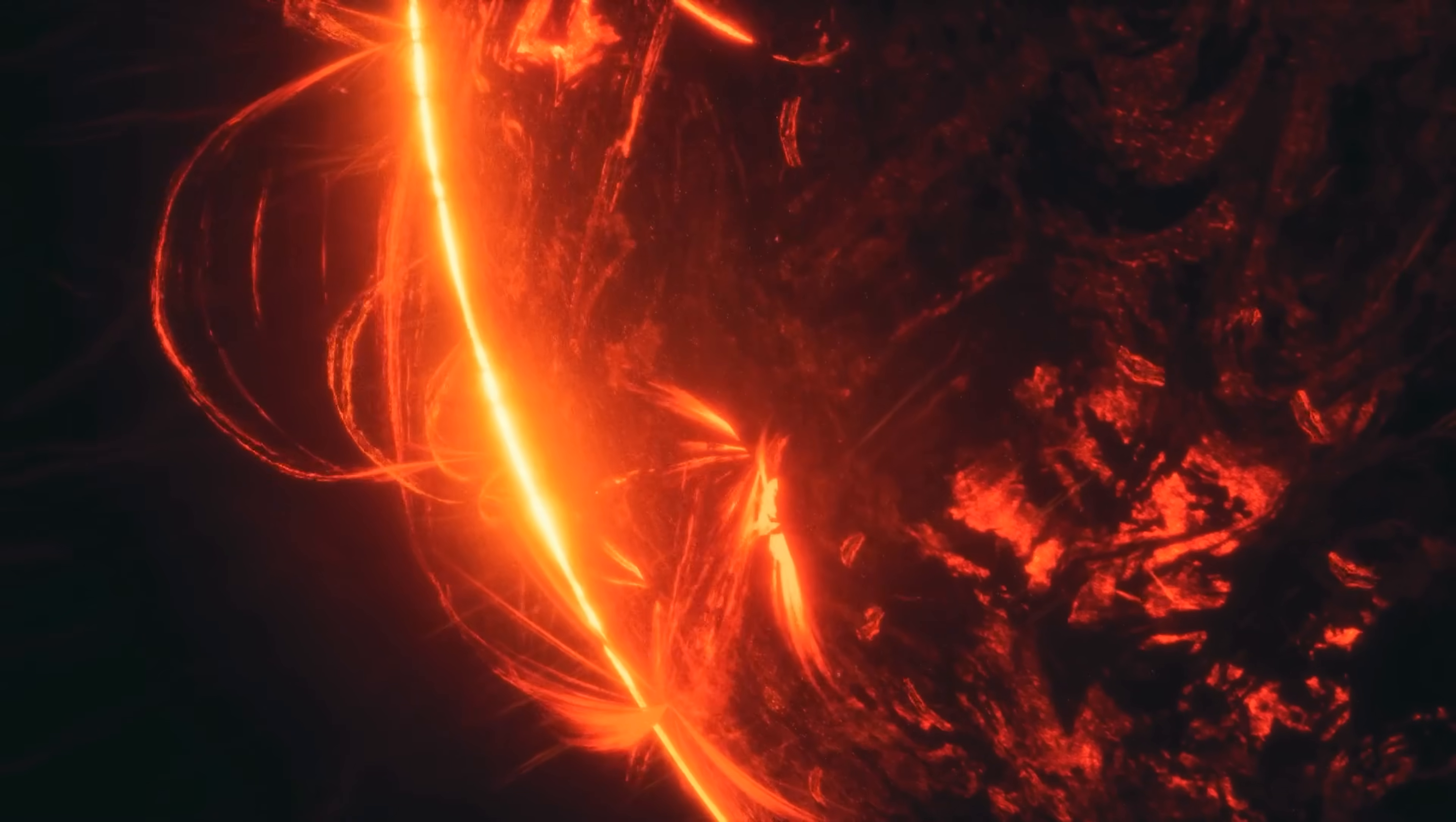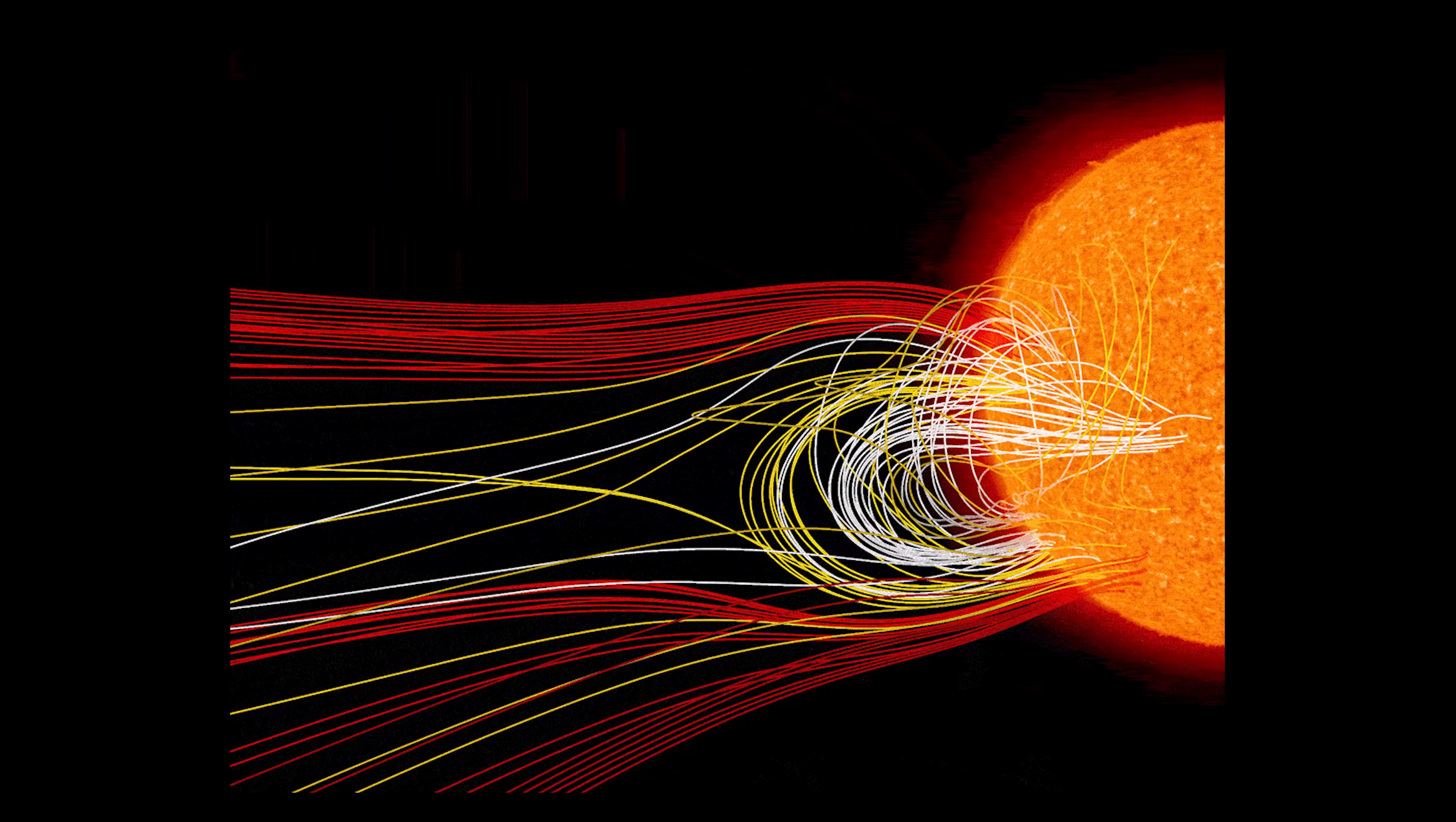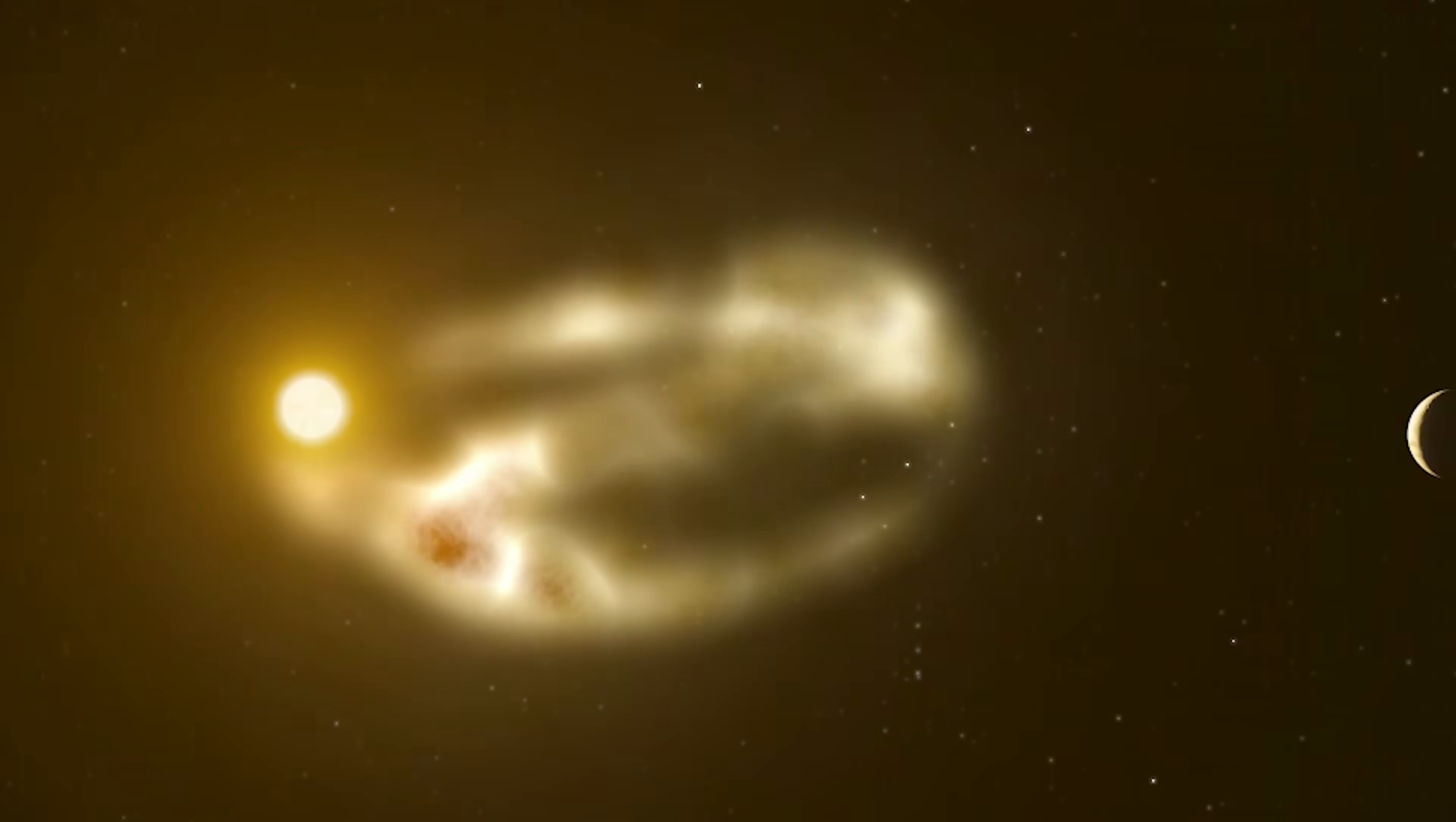In 2012, the worst solar storm in almost 200 years tore through Earth's orbit and missed us by only nine days. If it had erupted just a week earlier, or the storm site was pointed slightly differently, it would have ripped across the Sun-Earth divide and pummeled our planet.